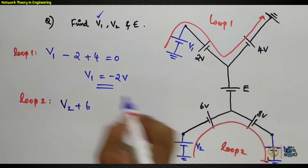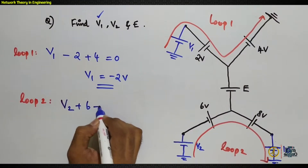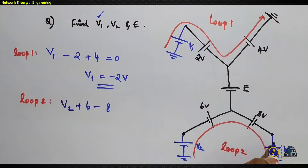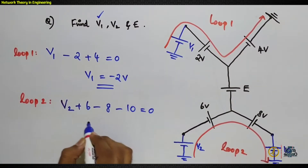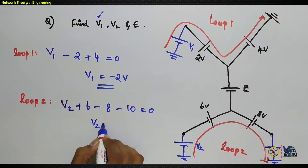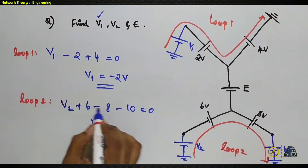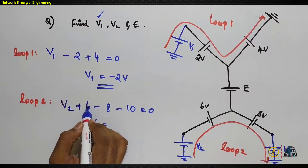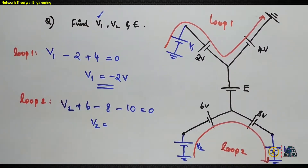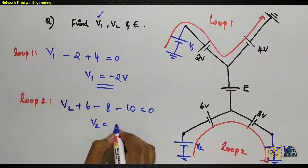Continuing the KVL for Loop 2: 8V is plus to minus, so take it as −8. The 10V is also plus to minus, so take it as −10. The equation becomes: v2 + 6 − 8 − 10 = 0, giving v2 = 12V.